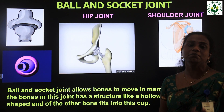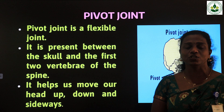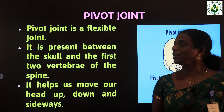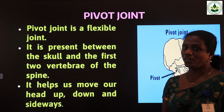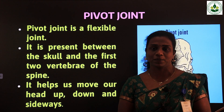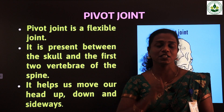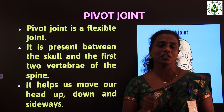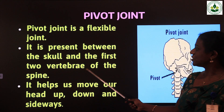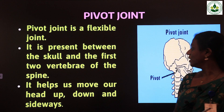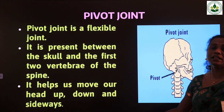Next we are going to study about pivot joint. It is a flexible joint compared to the hinge joint. We can mainly see the pivot joint between the skull and the first two vertebrae of the spine. Our backbone, or spine, or vertebral column, consists of many small irregular bones connected together — those irregular bones are named vertebrae. The pivot joint helps us move our head sideways, up and down.